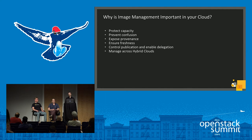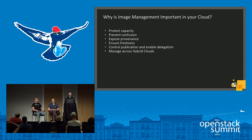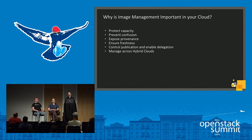Preventing confusion: users need to know which images have been blessed by an admin and which are just random uploads from other users that might be full of vulnerabilities. Exposing provenance — knowing where an image came from or who made it available. Ensuring freshness: is the image free of vulnerabilities and bugs, does it have the latest security patches? Controlling publication and delegation — we only let cloud admins make an image public, and all other image management delegation is delegated to users. Managing images across hybrid clouds so that managing those images looks the same across clouds.